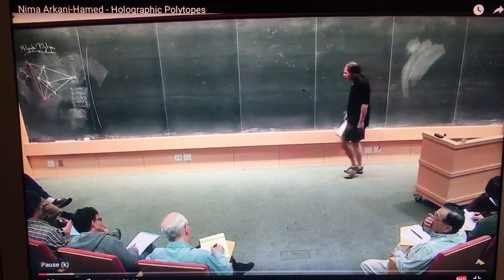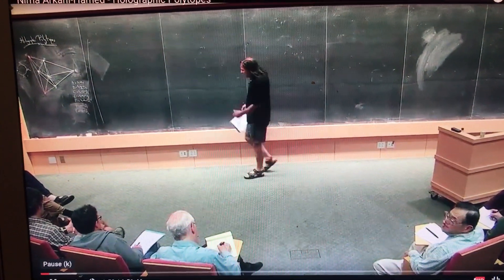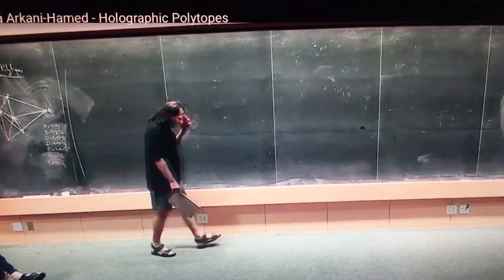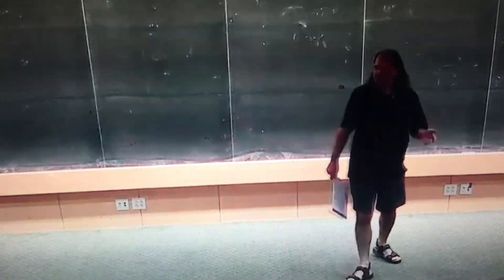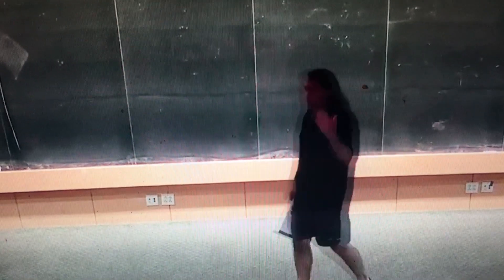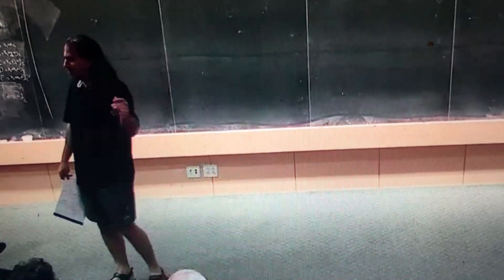And we've seen very concretely it's a toy model. The toy model is planar N equals four super Yang-Mills. Those of us who work in this business always apologize for this toy model. It is a toy model. The world is not N equals four super Yang-Mills. But it's worth remembering that of all the various toy models we talk about as theoretical physicists to describe the real world, this is the one which is closest to the real world for the relevant application.